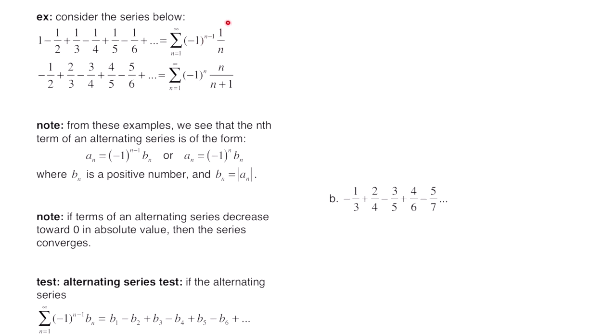We have the formula 1 over n, and that produces 1, 1 half, 1 third, 1 fourth. Similarly for the second series, the terms go from negative to positive to negative to positive, and you see it's 1 half, 2 thirds, 3 fourths, and so on.